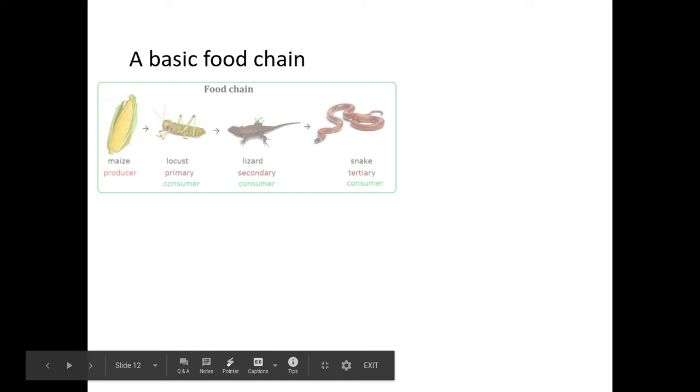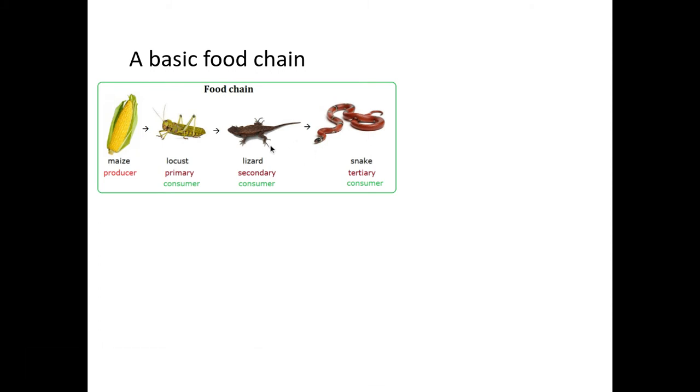If we look at a basic food chain, for example, locusts eat the maize, lizards eat the locusts, snakes eat the lizards. Don't forget the arrows show where the energy is being transferred.